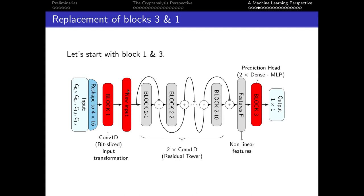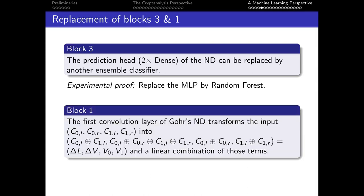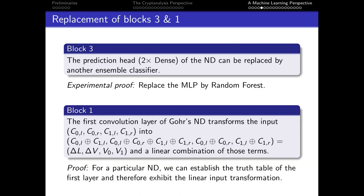We start by addressing blocks 1 and 3. Block 3 can be replaced by any ensemble classifier — for example, the MLP block can be replaced by random forest or gradient boosting. Block 1 can be replaced by a linear combination of the input. We choose to fix our choice on delta_L, delta_V, V0 and V1. This transformation can be formally proven by establishing the truth table of the first layer and exhibiting the linear input transformation.